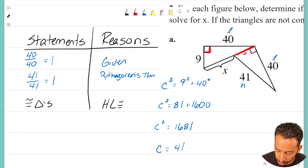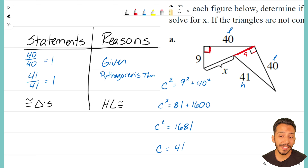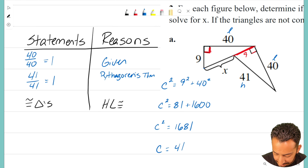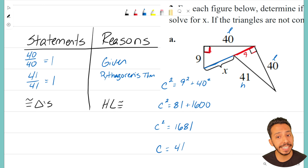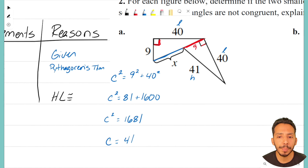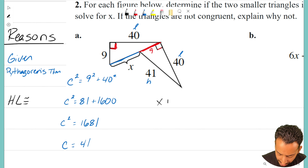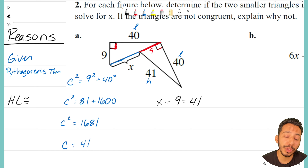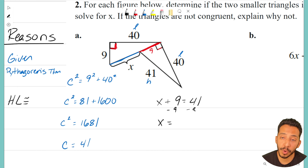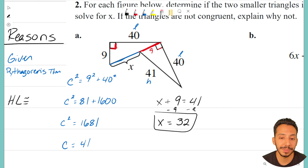That's actually leading into the last part of the problem: finding x. I know that the whole hypotenuse is 41. So to solve for x, I set up: x + 9 = 41. Subtracting 9 from both sides gives x = 32. That's our answer for problem A.